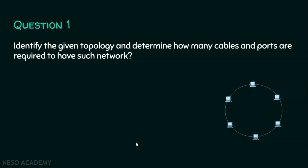Now we will move on to the questions. Question number one: identify the given topology and determine how many cables and ports are required to have such a network. We are given a topology and we have to identify what it is. The answer is very simple — this is a ring topology. How many cables and ports are required to have such a network? Let us formally solve this question.